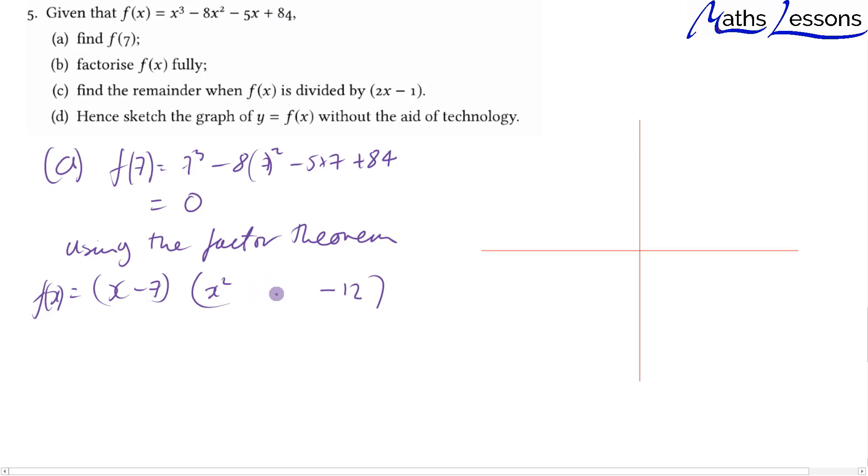What do we need here? We need -8x². We've got -7x² already, so we need another -x². If we do -x times x, we get -x². Let's check this works for the x terms: we get 7x - 12x, which gives us -5x. Let's factorize this further: this is (x - 4)(x + 3).